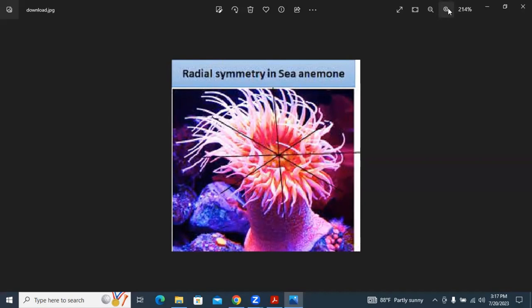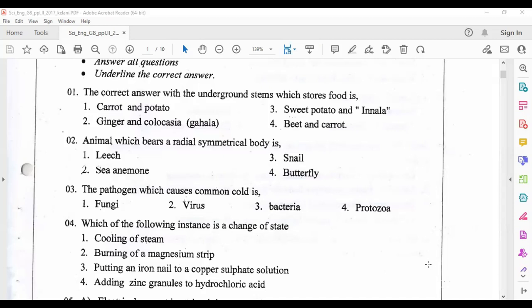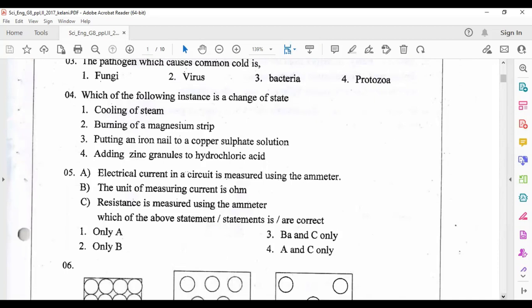Question number three: the pathogen which causes common cold is answer two, virus. For which of the following instances is a change of state? Answer one, cooling of steam. Steam is a change of state from the gaseous state to liquid state. When cooling, steam is turned into liquid water.